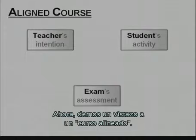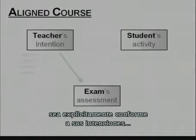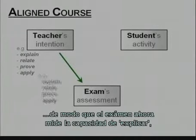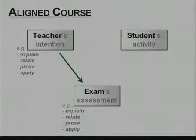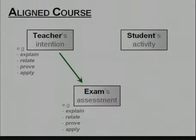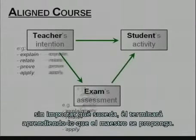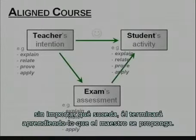Now let's have a look at an aligned course. Here the teacher has taken great care in making the exam explicitly conform to his intentions, so that the exam now measures the ability to explain, relate, prove, and apply. Here there is no shortcut for Robert — whatever happens, he just ends up learning what the teacher is intending.